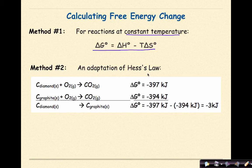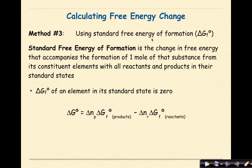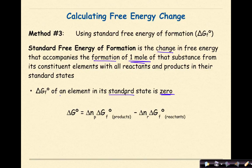Method two is an adaptation of Hess's law. Here I have heat of formation reactions that I manipulate using the delta G values assigned to them, likely from a reference table at the back of your book. I take the difference of the two and find it to be negative three kilojoules. Method three uses standard free energy of formation — the change in free energy that accompanies the formation of one mole of a substance from its constituent elements with all reactants and products in their standard states. Delta G of formation of an element in its standard state is zero, very similar to what we saw with delta H values. To find our change in free energy, we take the free energy of the products minus the free energy of the reactants.